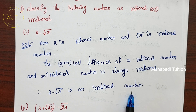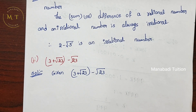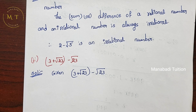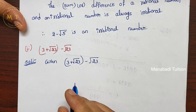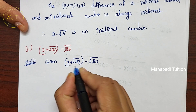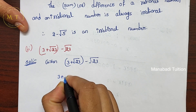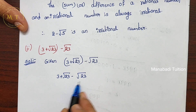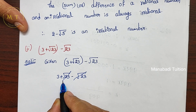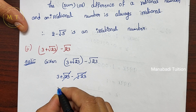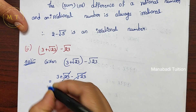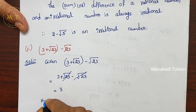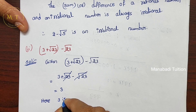So 2 minus root 5 is an Irrational number. Next, second one is 3 plus root 23 minus root 23. Given 3 plus root 23 minus root 23. Here, minus root 23 and plus root 23 cancel each other out.